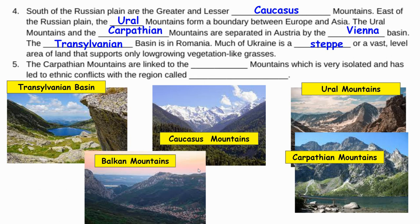Much of Ukraine is on a steppe, a vast level area of land that supports only low-growing vegetation like grasses. The Carpathian Mountains are linked to the Balkan Mountains, which are very isolated — this isolation has led to a lot of ethnic conflicts among its people. This region's conflicts are called Balkanization, which played a part in the start of World War I. In the 1990s, when the former country of Yugoslavia was coming out of communism and becoming independent nations, there was lots of fighting among different ethnic groups in the region.